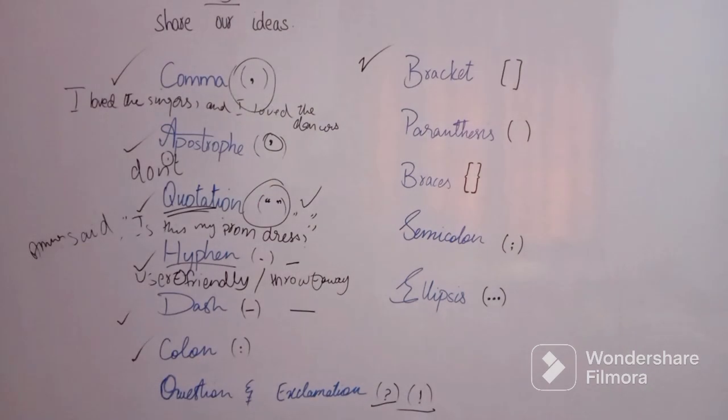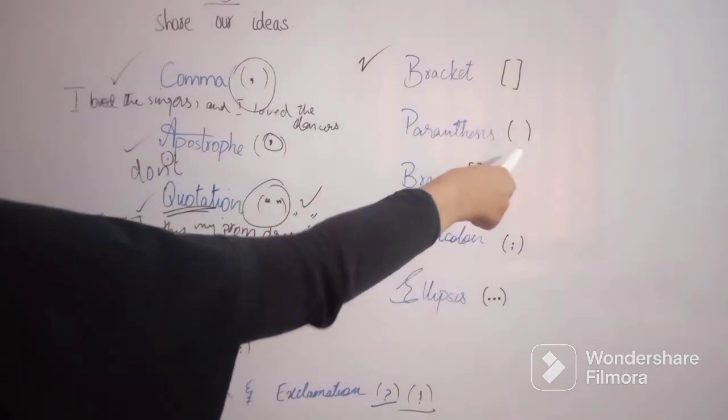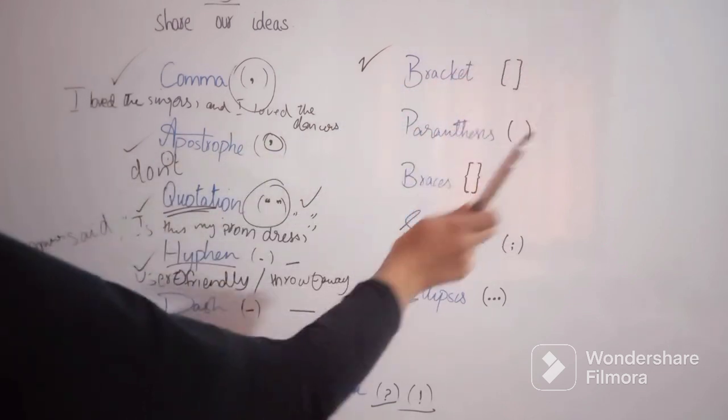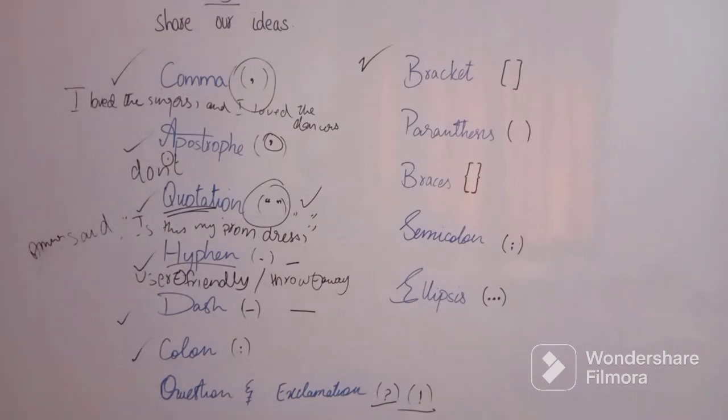Next is bracket. We sometimes get confused about brackets. So actually, brackets are these ones. This is the bracket, this is the parenthesis, and this is the braces. Brackets are kind of squarely type with sharp edges. Brackets are most commonly employed in academic writing within a quotation where the writer is omitting or explaining something.